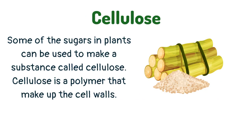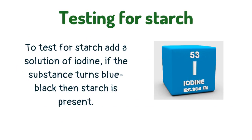Some of the sugars in plants can be used to make a substance called cellulose. Cellulose is a polymer that makes up the cell walls. To test for starch, add a solution of iodine — if the substance turns blue-black then starch is present.